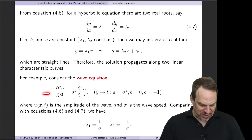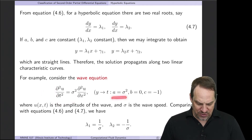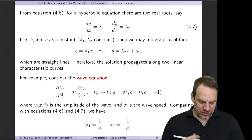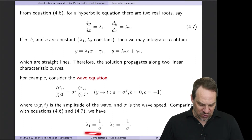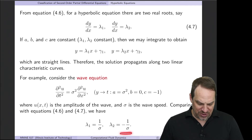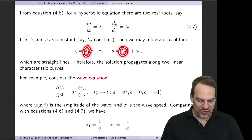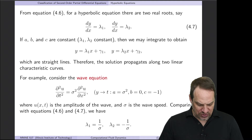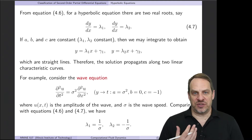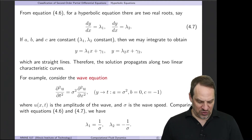With a, b, and c identified, we can evaluate b²−4ac and put that into the quadratic formula. We find that λ₁ and λ₂ are simply 1/σ and −1/σ. These are the slopes in the straight-line characteristic curve equations, so the slopes correspond to plus and minus the reciprocals of the wave speed.